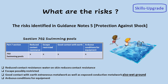Section 702 regarding swimming pools has the same risk assessment considerations. An important extra factor to be aware of is that any possible wet ground surrounding the pool would be another thing to take into consideration.